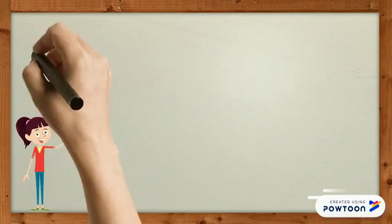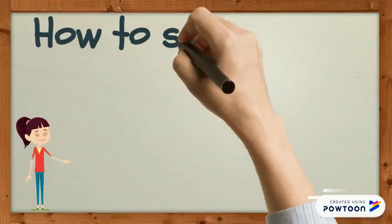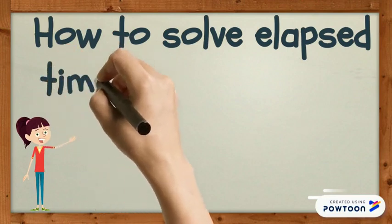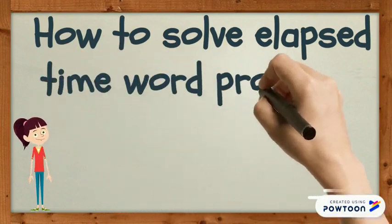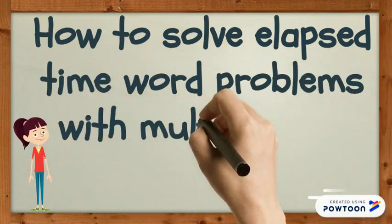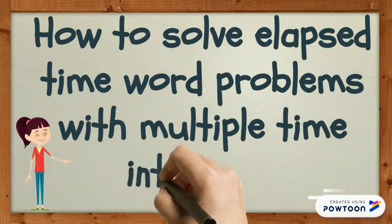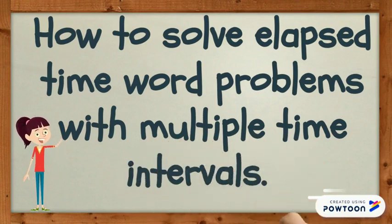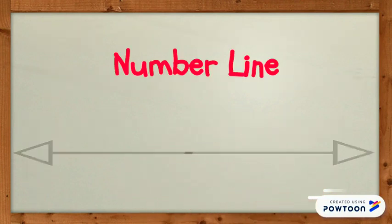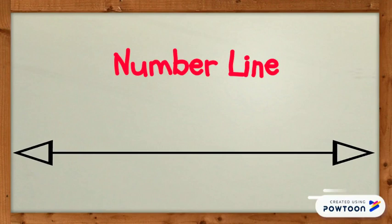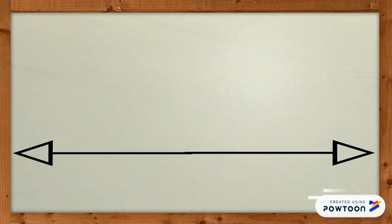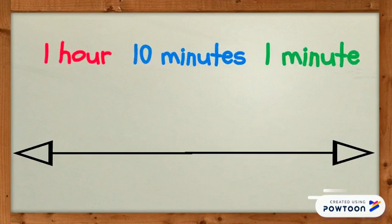Welcome! In this video, we're going to learn how to solve elapsed time word problems with multiple time intervals. To measure elapsed time, we are going to use a number line. Our number lines for elapsed time will count by intervals of 1 hour, 10 minutes, and 1 minute.